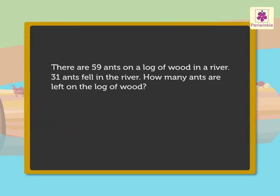First, we read the story. What information does it give? There are 59 ants on a log of wood in a river. 31 ants fell in the river. Now, let us see what we have to find out.